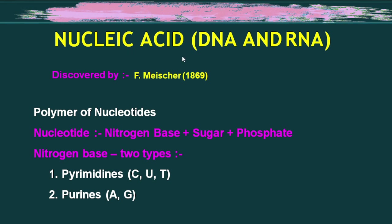Nucleic acid was first discovered by the scientist Friedrich Mischer in 1869. It is a polymer of nucleotides, and the backbone is made of nucleotides to which nucleosides are attached.